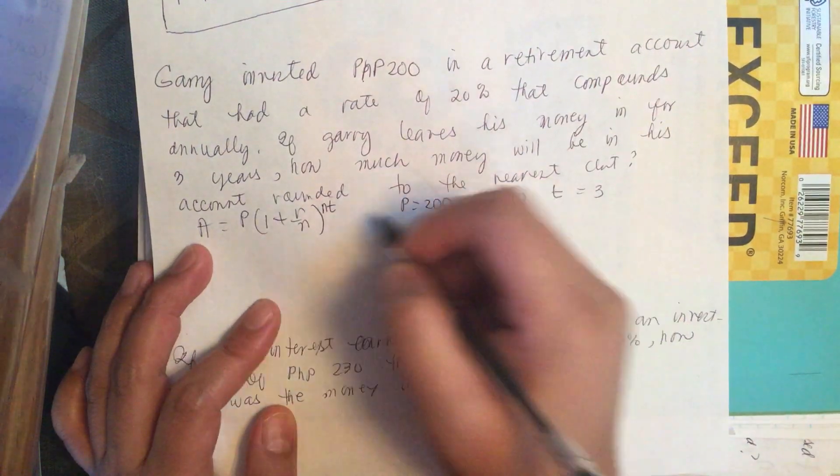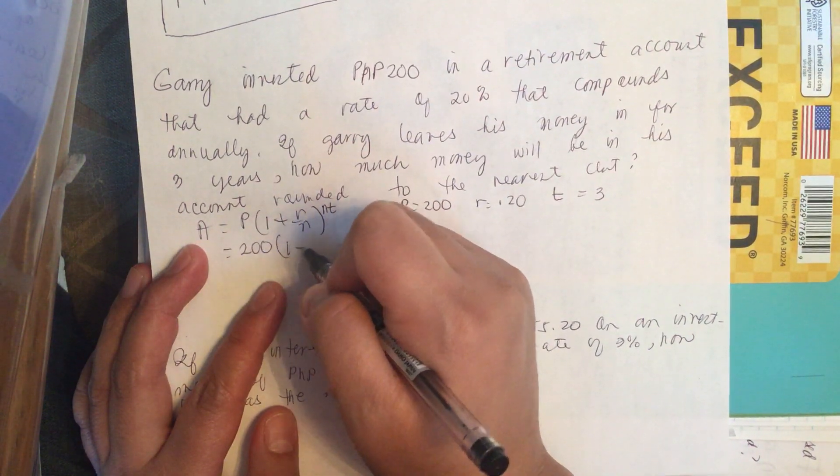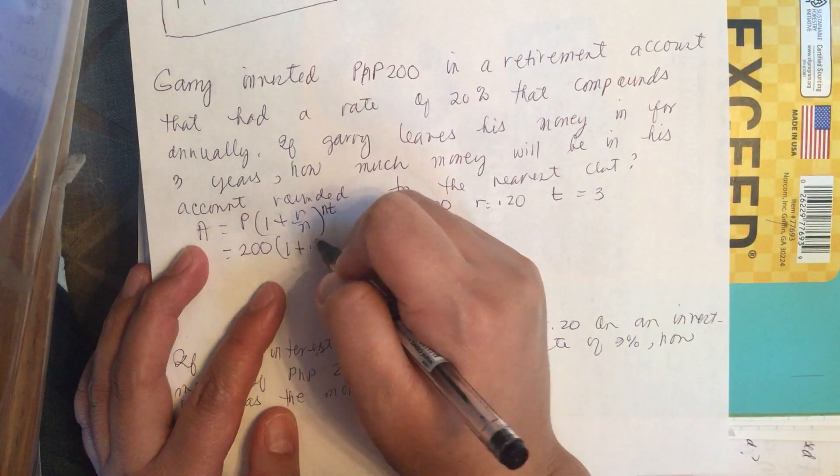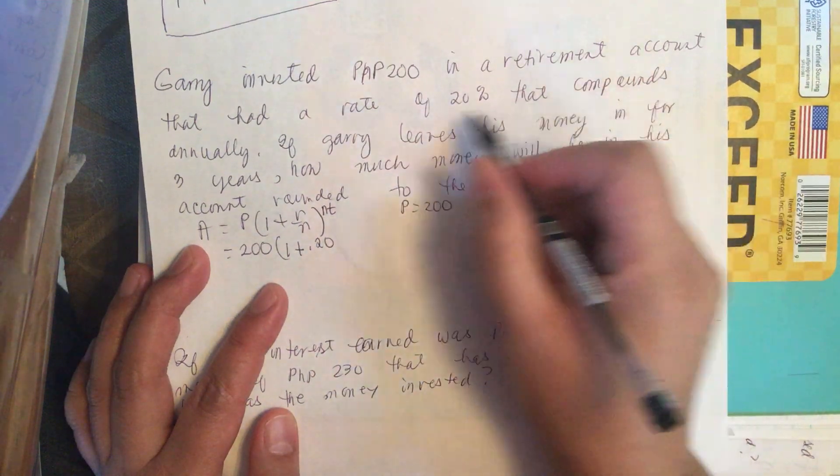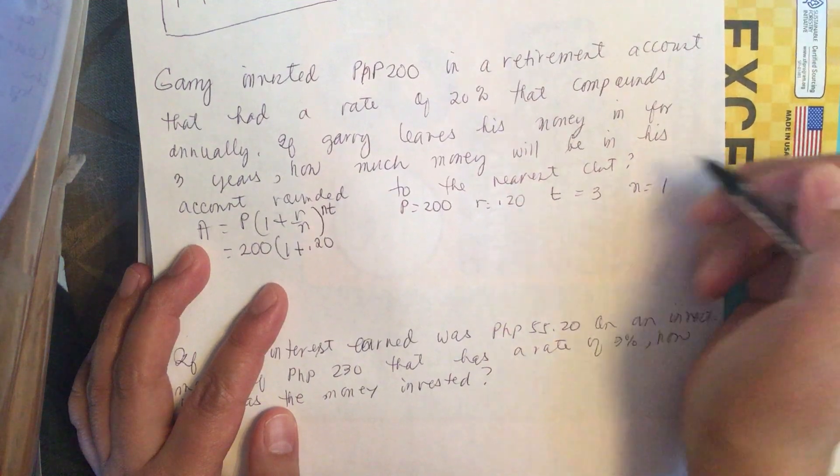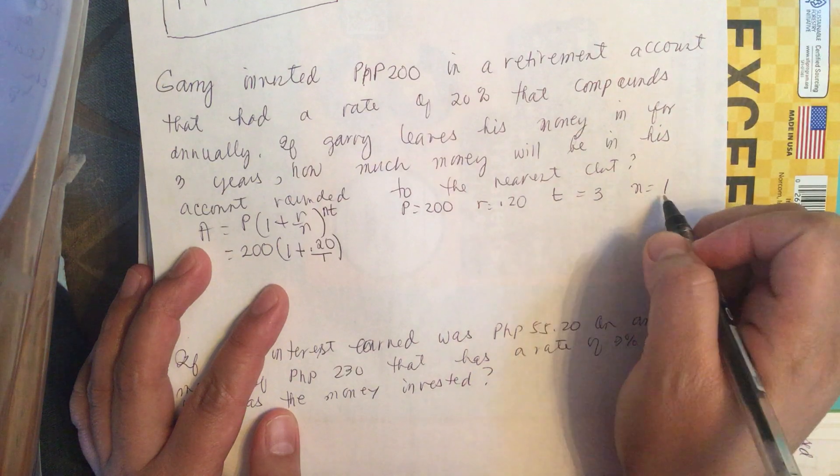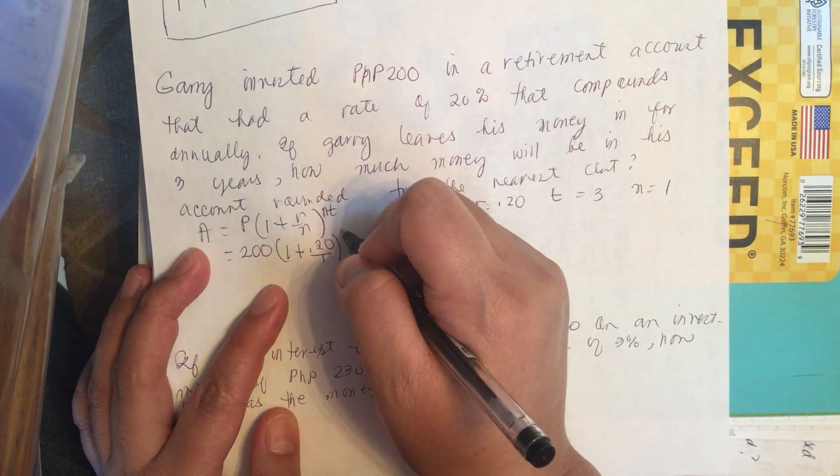We plug in our numbers. So this is equal to 200 times (1 plus 0.20). N is equal to 1 since this is annually. So over 1 times Nt which is 3 times 1 or just 3.